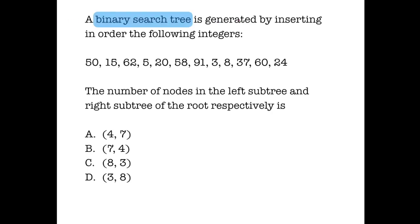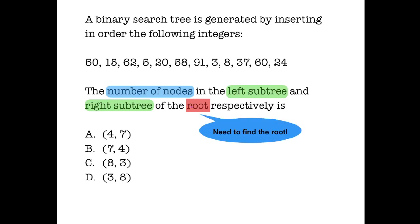A binary search tree is generated by inserting in order the following integers. The first element which is inserted is 50, and then 15, and then 62, and so on. We need to find the number of nodes in the left subtree and the right subtree of the root. So first we need to find the root.